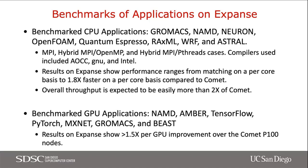We have gone through quite a few benchmarking efforts on Expanse. We've seen a broad range of applications across different domains, with performance ranging from matching Comet on a per-core basis to almost 1.8x faster per-core. On the GPU side, we've benchmarked MD codes like NAMD and AMBER and machine learning codes. We've seen greater than 1.5x per GPU improvement over Comet P100 nodes, and for some codes it's closer to 2x — 1.85 to 2x for AMBER, for example.